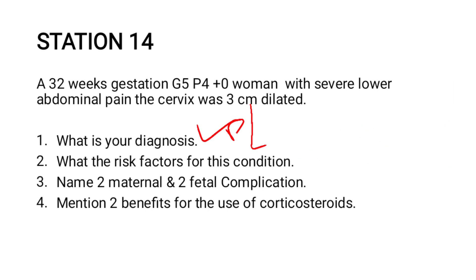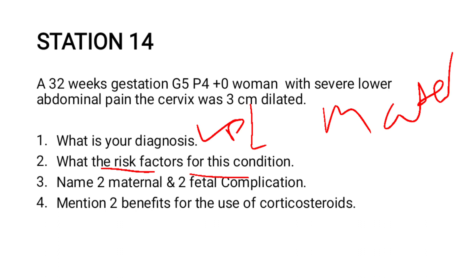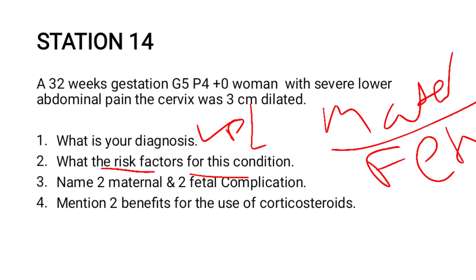For question three, maternal complications include risk of cesarean section due to an underdeveloped lower uterine segment or very small birth weight, and also an increased risk of infection. Fetal complications include prematurity, necrotizing enterocolitis, respiratory distress syndrome, intraventricular hemorrhage, and retinopathy of prematurity.